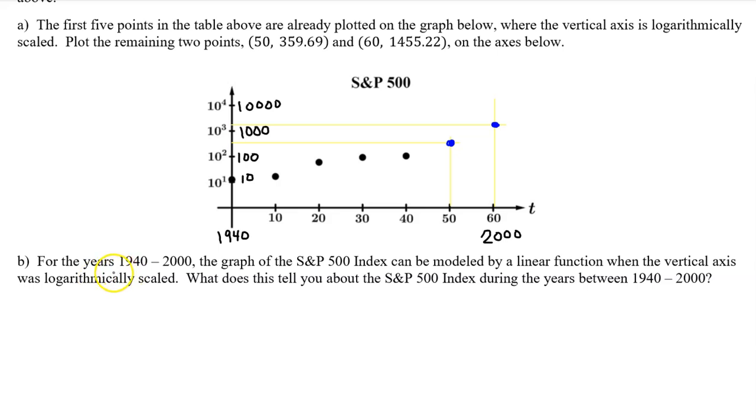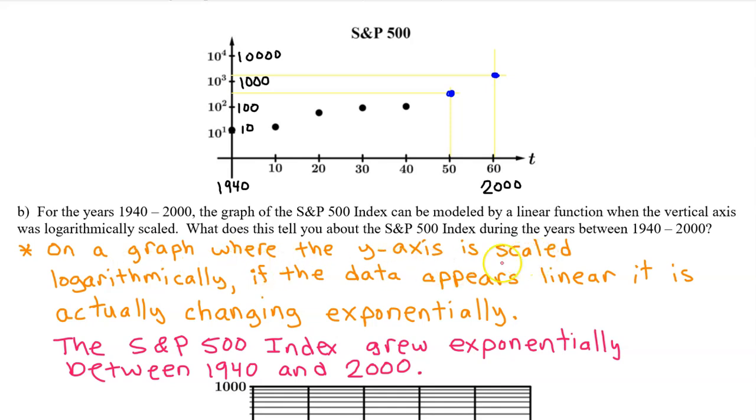Part B, for the years 1940 to 2000, the graph of the S&P 500 index can be modeled by a linear function where the vertical axis was logarithmically scaled. What does this tell you about the S&P 500 index during the years between 1940 and 2000? On a graph where the y-axis is scaled logarithmically, if the data appears linear, it's actually changing exponentially. So the S&P 500 grew exponentially between 1940 and 2000.